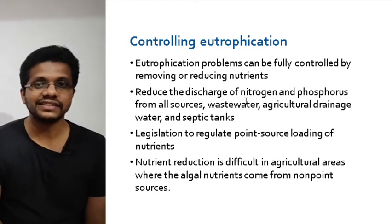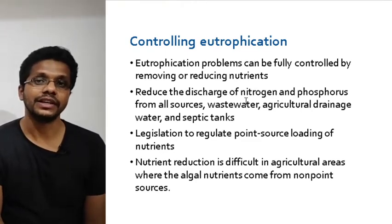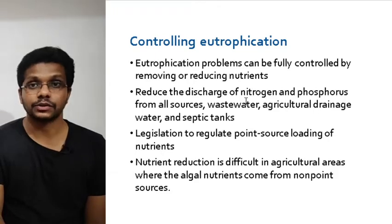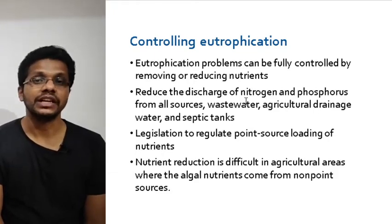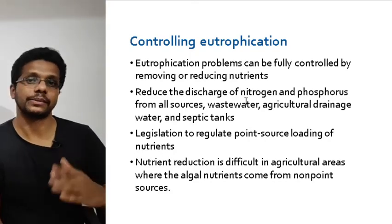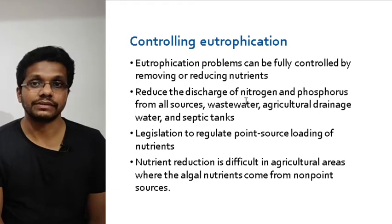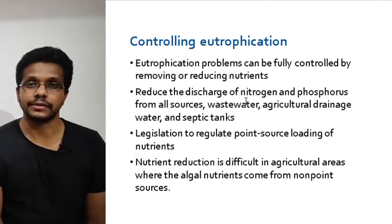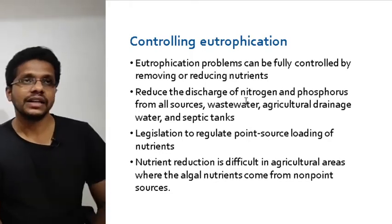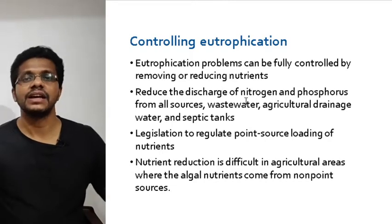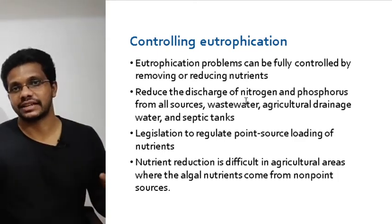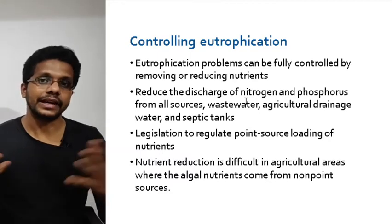How to control eutrophication? The easiest way is to prevent nutrient input into the lakes, but that is not easy because nutrients come from different sources. If it is a point source, control is easier — we can stop industrial effluent or wastewater treatment plant discharge. But most problems are associated with non-point sources, since farmers apply fertilizers in their fields and during rain and runoff, part of those fertilizers enter the lakes. There should be a fine balance between fertilizer application and the health of the lakes.